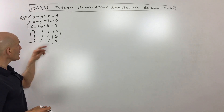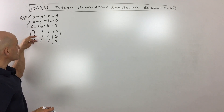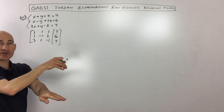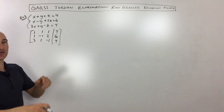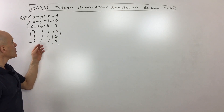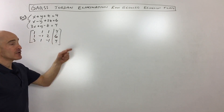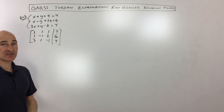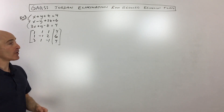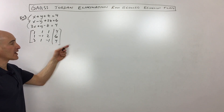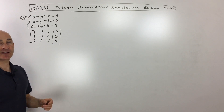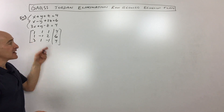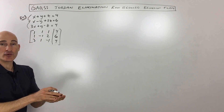Now remember, you can interchange any two rows — so you're going to switch them. You can multiply any row by a constant multiple, as long as it's not zero, so you multiply through by 2 or 10 like that. And you can add any row to any other row.